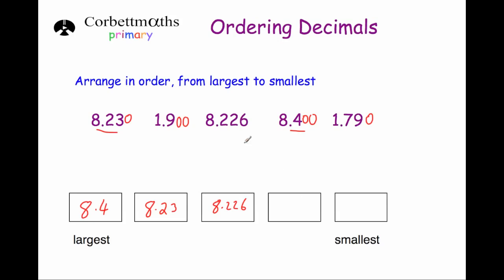Now for the remaining numbers, 1.9 and 1.790. Both have 1 in the units, but looking at the tenths, 1.9 has a 9 in the tenths column whereas 1.79 only has a 7. So the next largest is 1.9 and the smallest is 1.79. And that's those numbers arranged in order from largest to smallest.